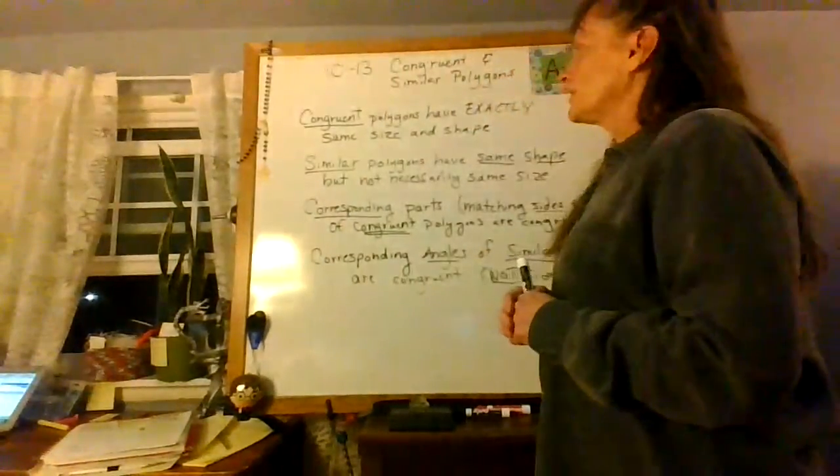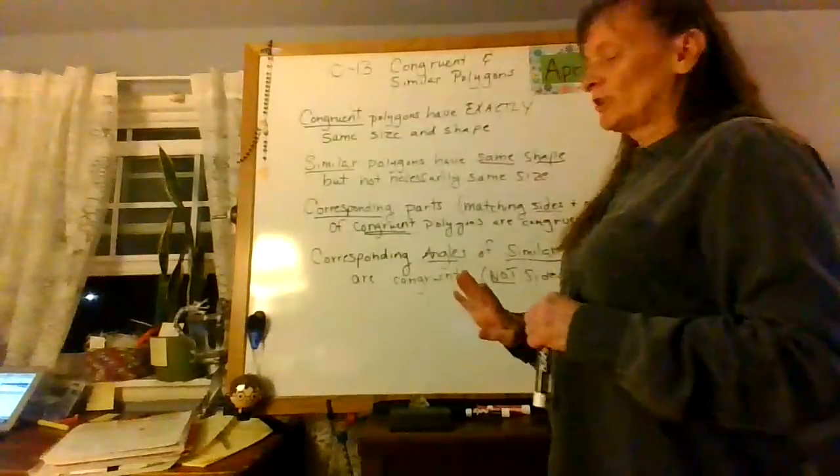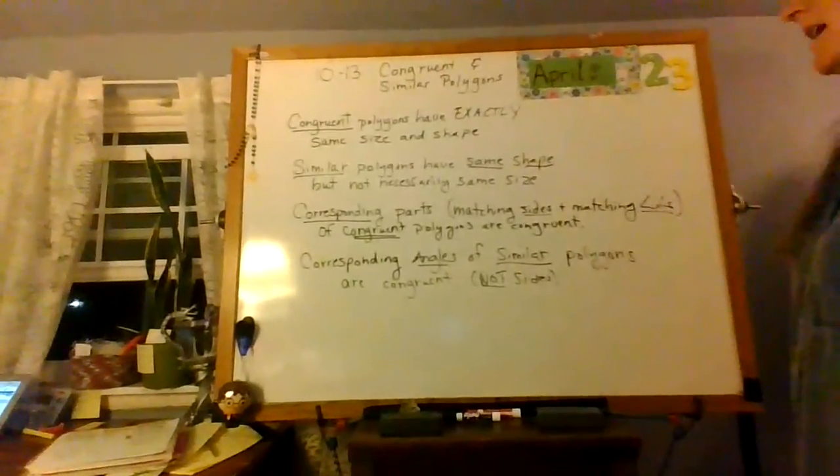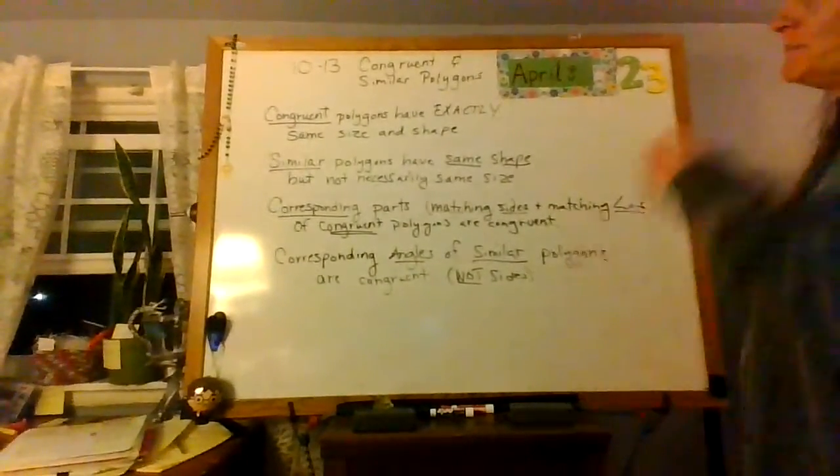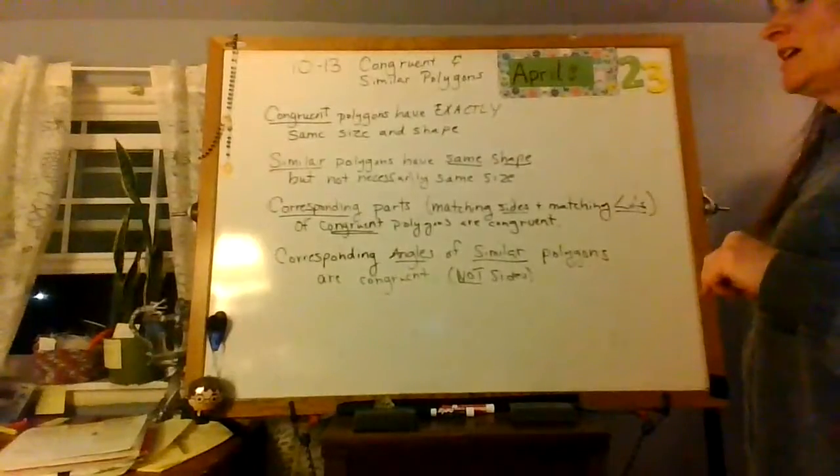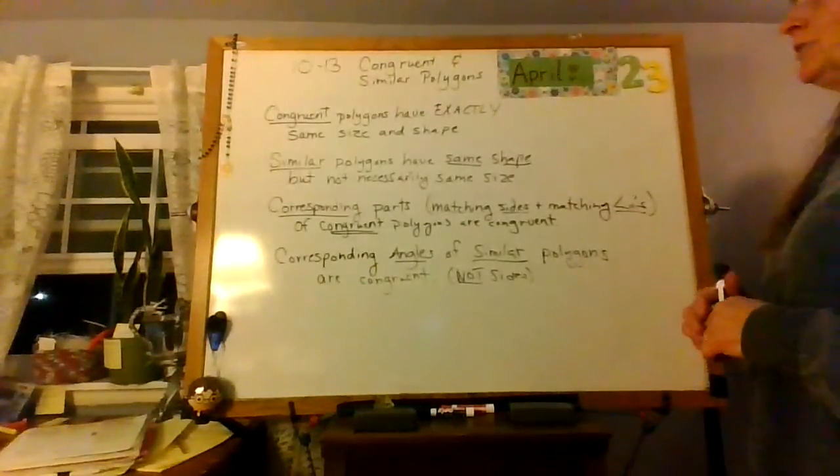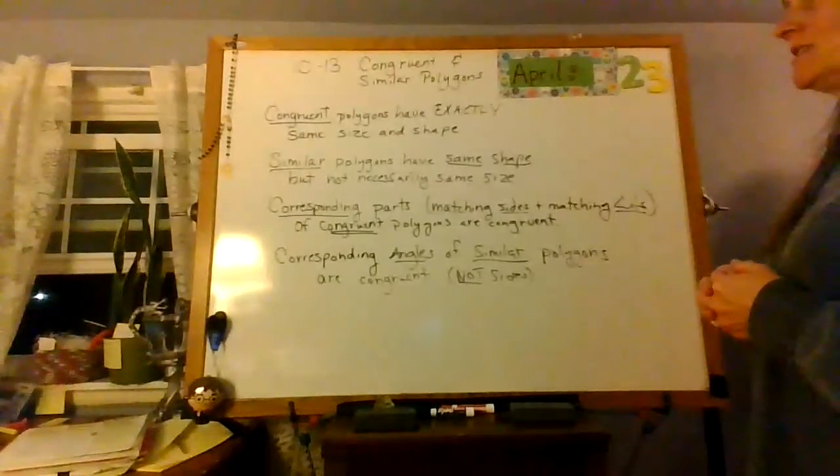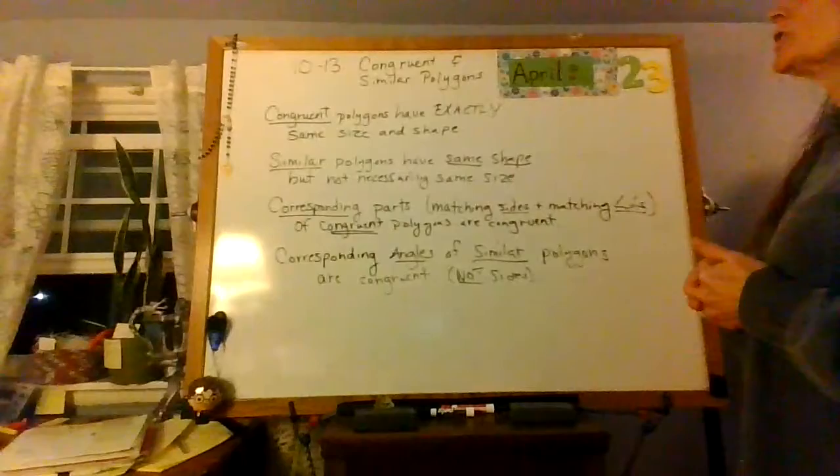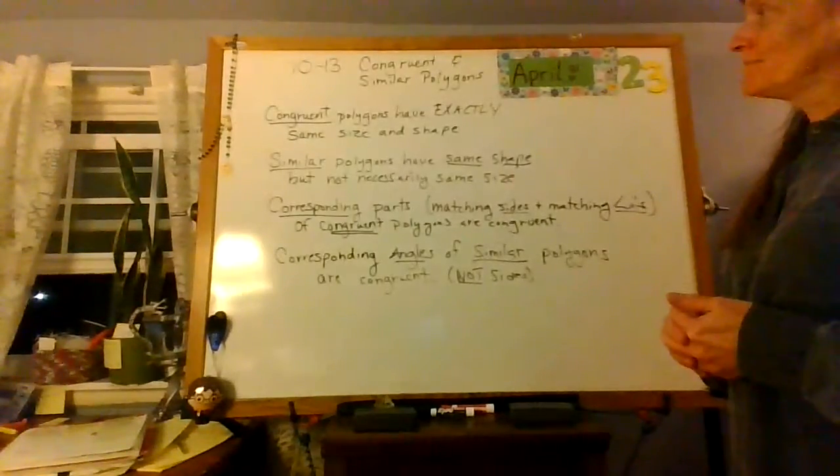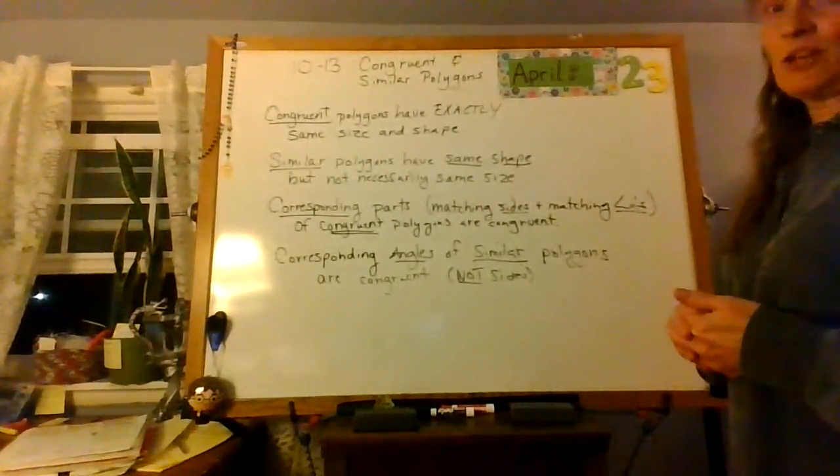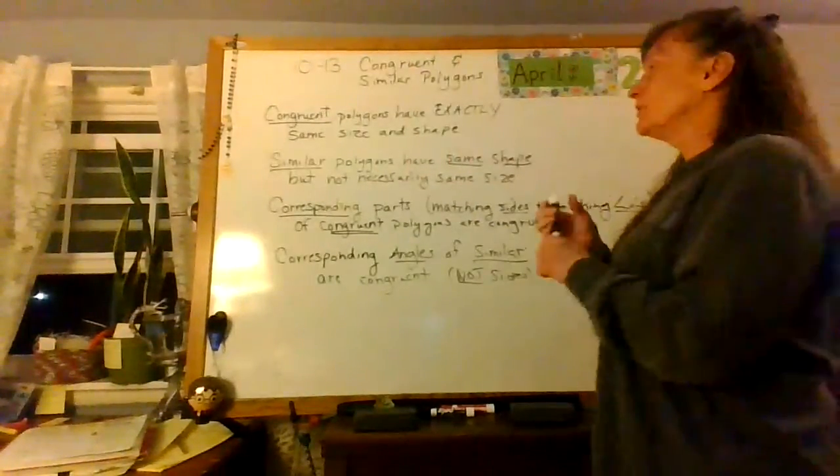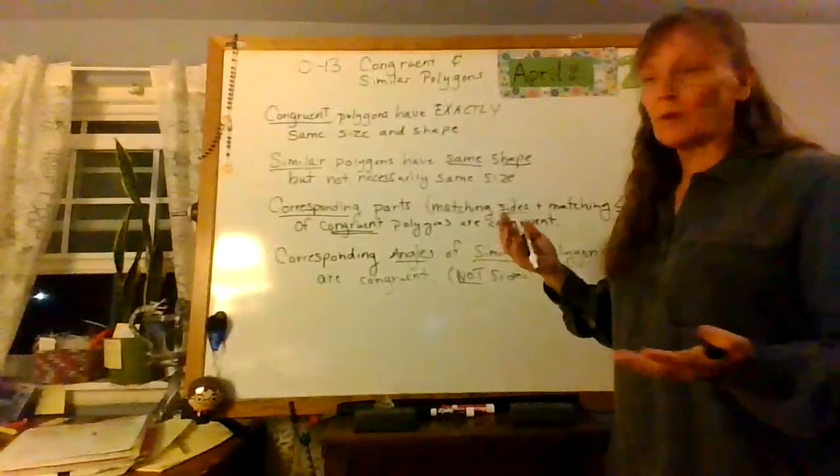All right. So, we have four things that you need to copy down today. I have those typed up so you can look at your notes. Hopefully you've looked at those and familiarized yourself with them. If not, you need to do that. We're going to talk about these for a second. So, congruent polygons have exactly the same size and shape. Congruent is another word really for equal, right?